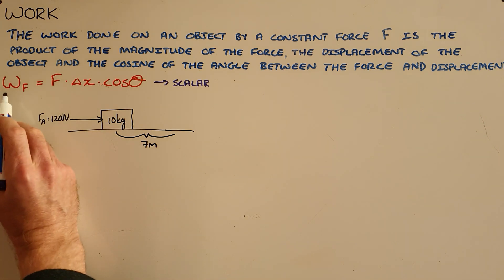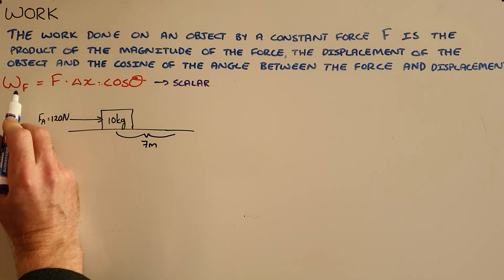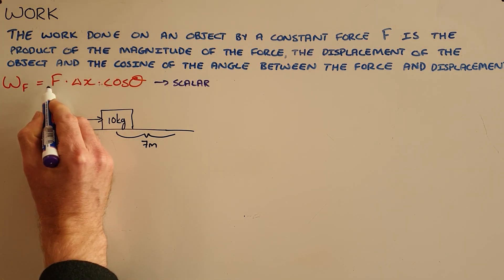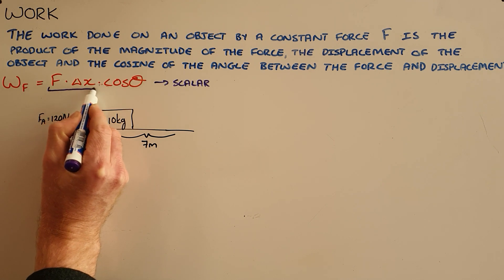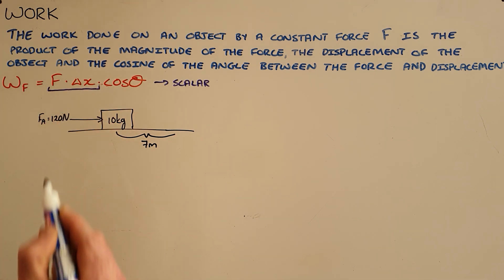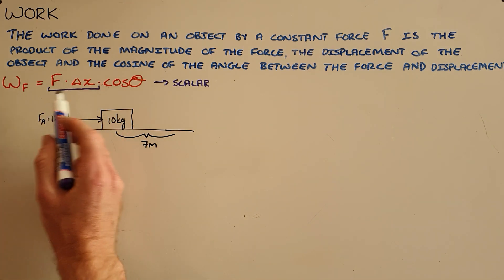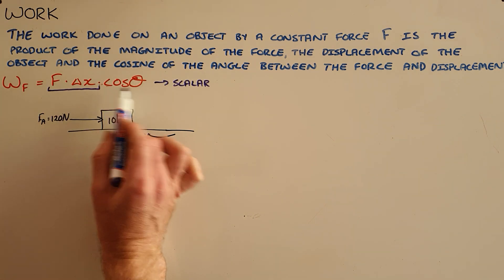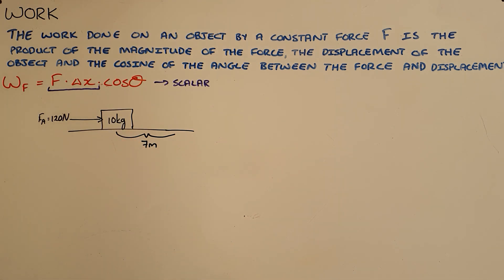We have a formula that tells us that the work done by force F is equal to the product of that force and the displacement of the object, also multiplied by the cosine of the angle between the force and the displacement.